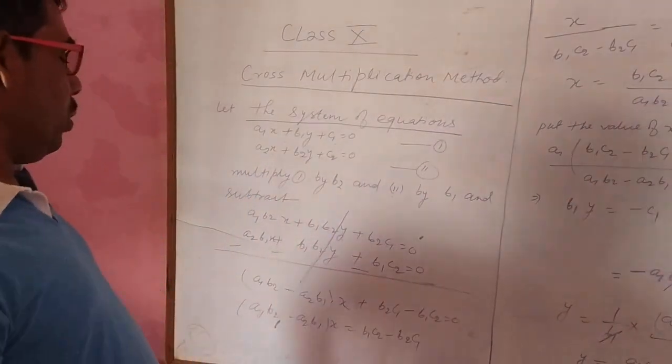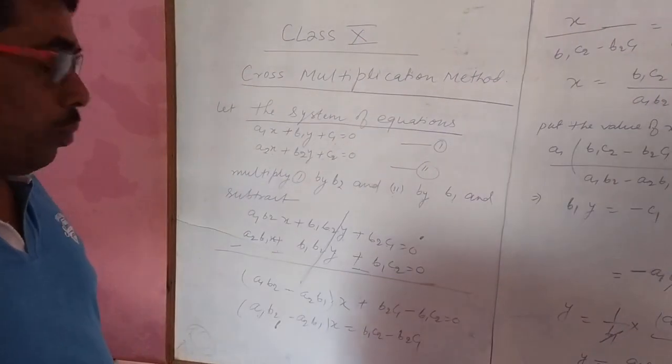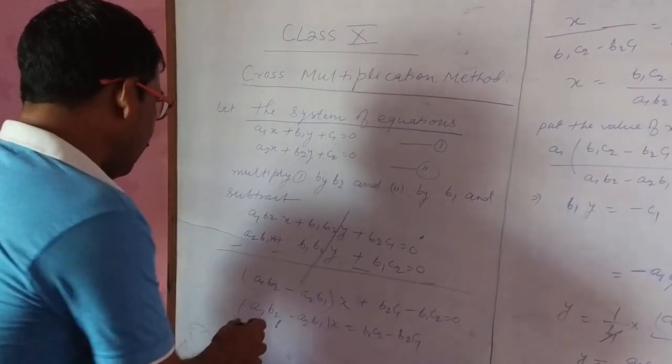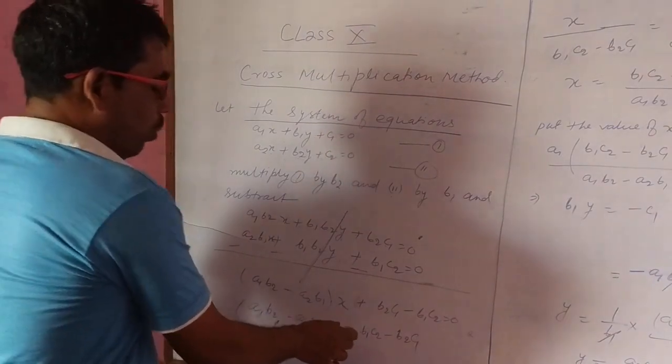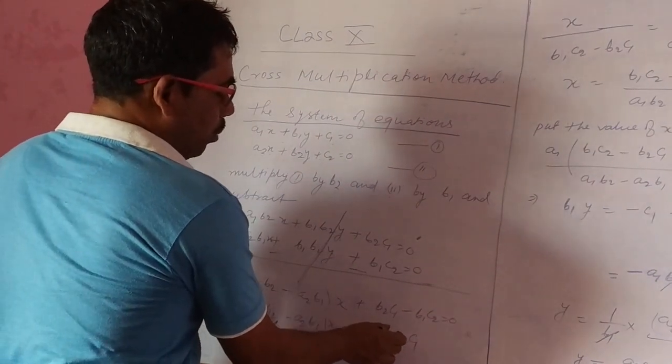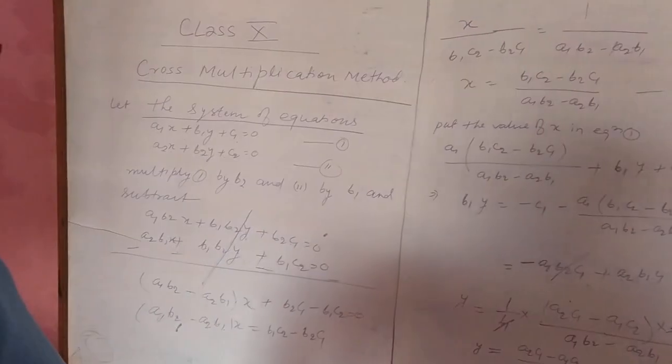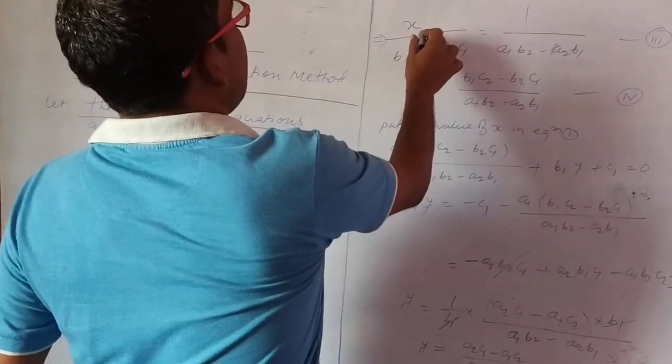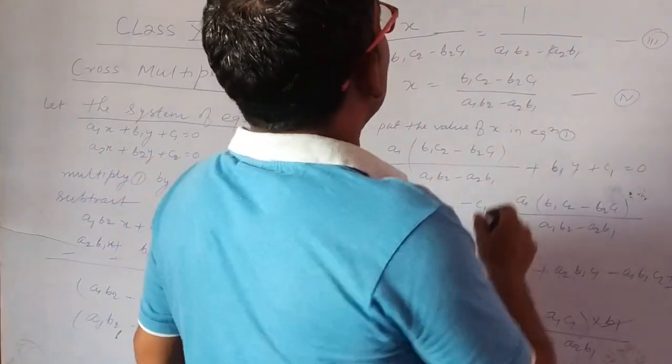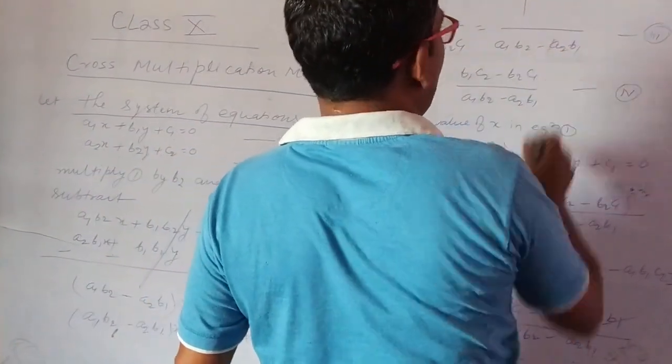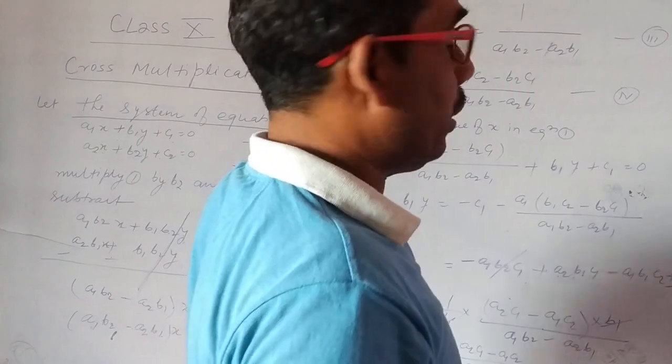This b2c1 minus b1c2 transpose other side. Then we get a1b2 minus a2b1 into x equal to b1c2 minus b2c1. This can be written x by b1c2 minus b2c1 equal to 1 by a1b2 minus a2b1. Equation number 3 consider.